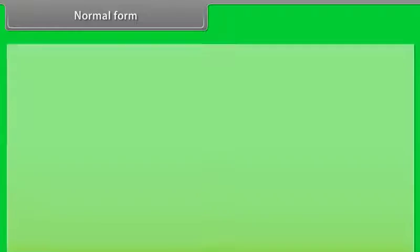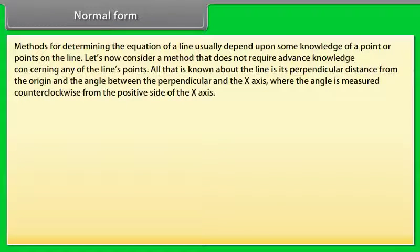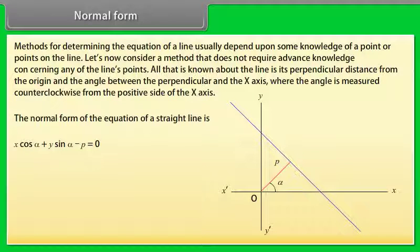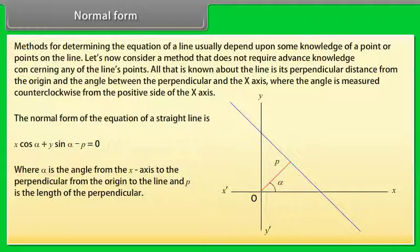Normal form. Methods for determining the equation of a line usually depend upon some knowledge of a point or points on the line. Normal form is a method that does not require advanced knowledge concerning any of the line's points. All that is known is the line's perpendicular distance from the origin and the angle between the perpendicular and the x-axis, measured counterclockwise from the positive side. The normal form is: x cos α + y sin α − p = 0, where α is the angle from the x-axis to the perpendicular from the origin, and p is the length of the perpendicular.